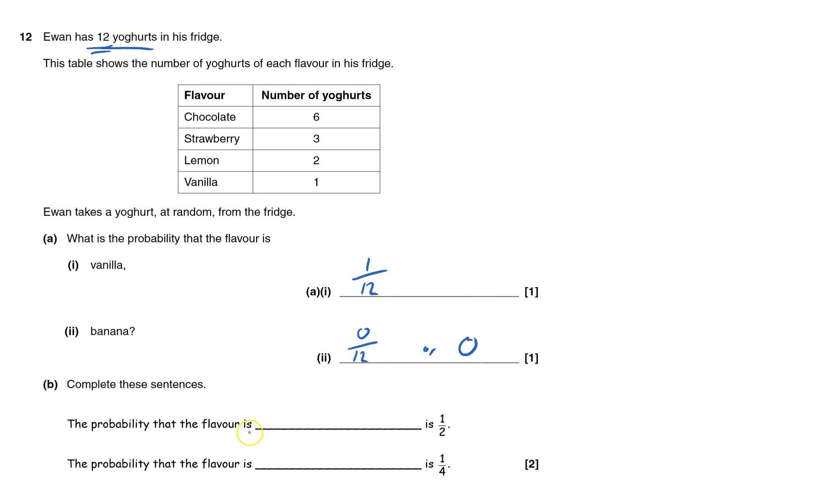To complete the sentence: the probability the flavor is something that equals a half. If we're giving it out of 12, that would be 6 out of 12, which is a half. That's chocolate.